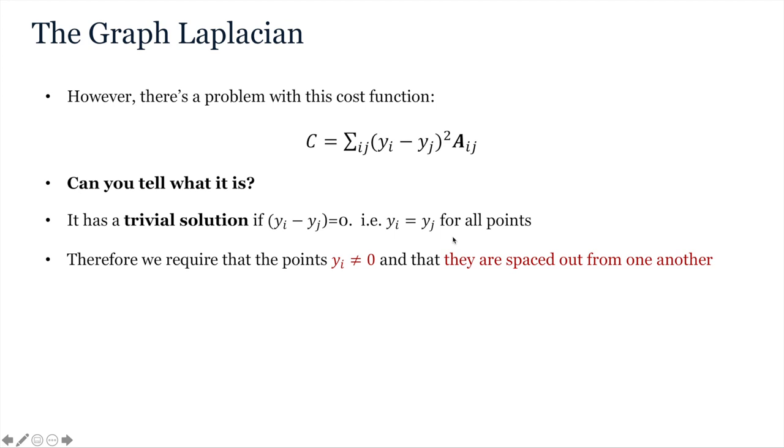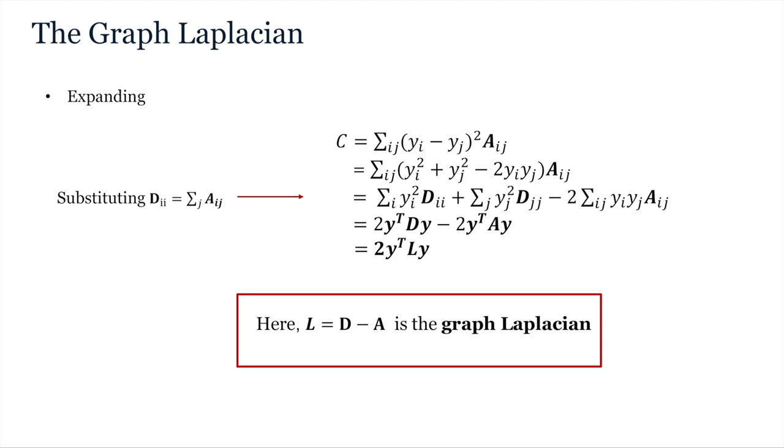And in fact, what is the graph Laplacian? Well, if we multiply out this expression and then substitute in for the sum of A over each column as D, where D here is a diagonal matrix representing the degree of each vertex or node, in other words, the total number of neighbours that each node has, then we can see that this reduces to an expression in D minus A, which is otherwise known as the graph Laplacian.